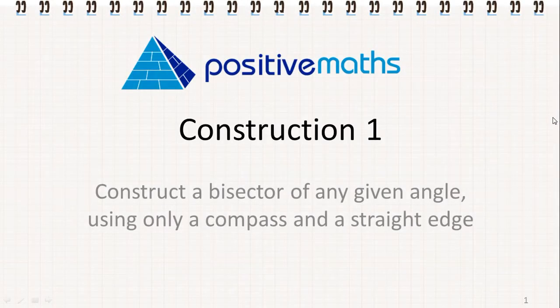Construction 1. Construct a bisector of any given angle using only a compass and a straight edge.